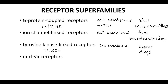The fourth superfamily is the nuclear receptors. Nuclear receptors are not found in the cell membranes. Instead, they are found in the nucleus. Nuclear receptors often affect a broad range of responses in the cell, including gene expression. Steroids are ligands of nuclear receptors.